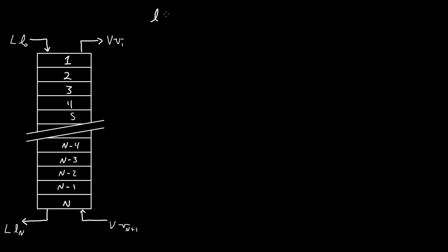Little l is equal to the capitalized L times the mole fraction in the liquid — that's how much contaminant we have in the liquid stream. So for L0, that would be L0 times X0.